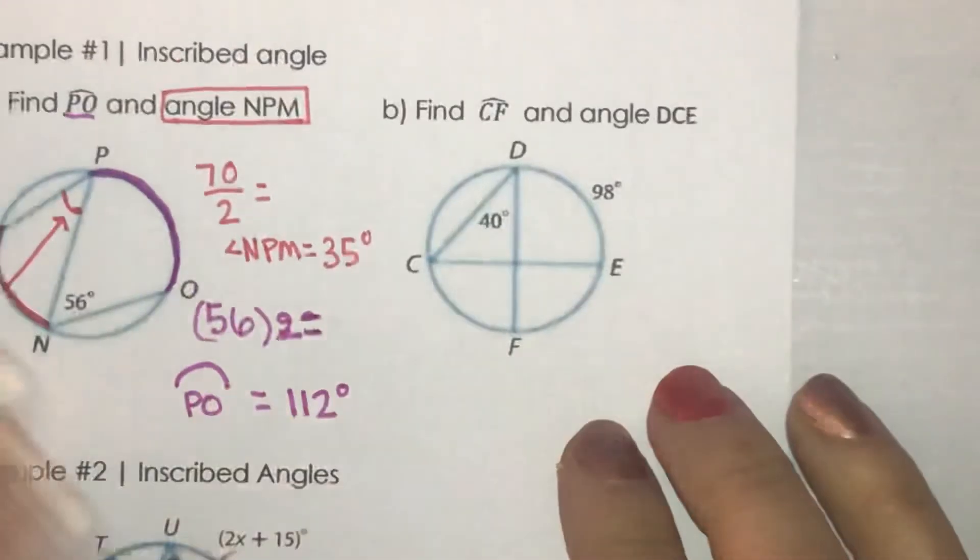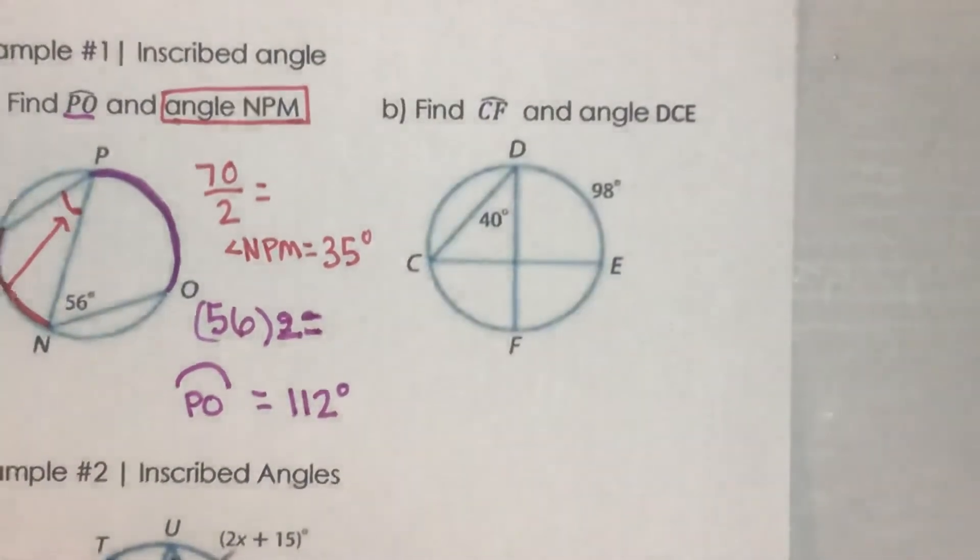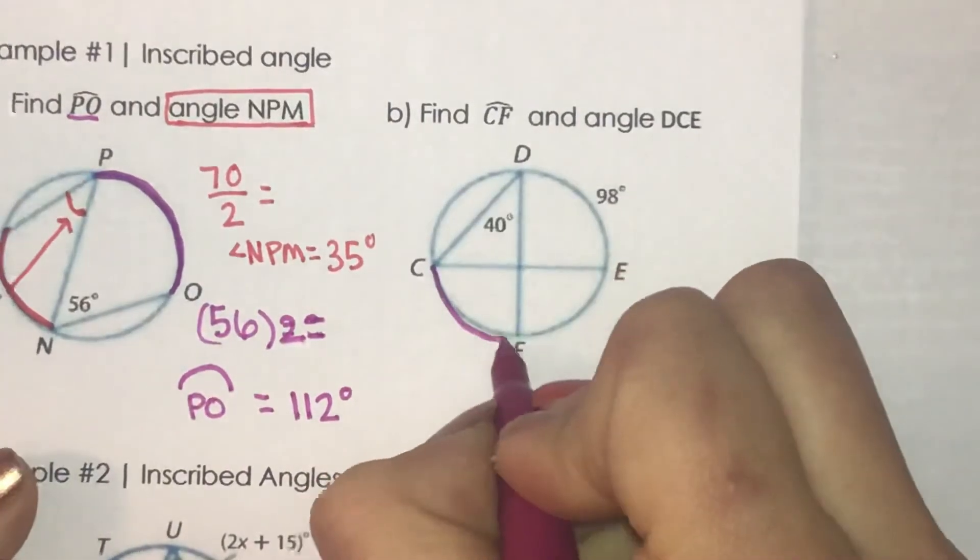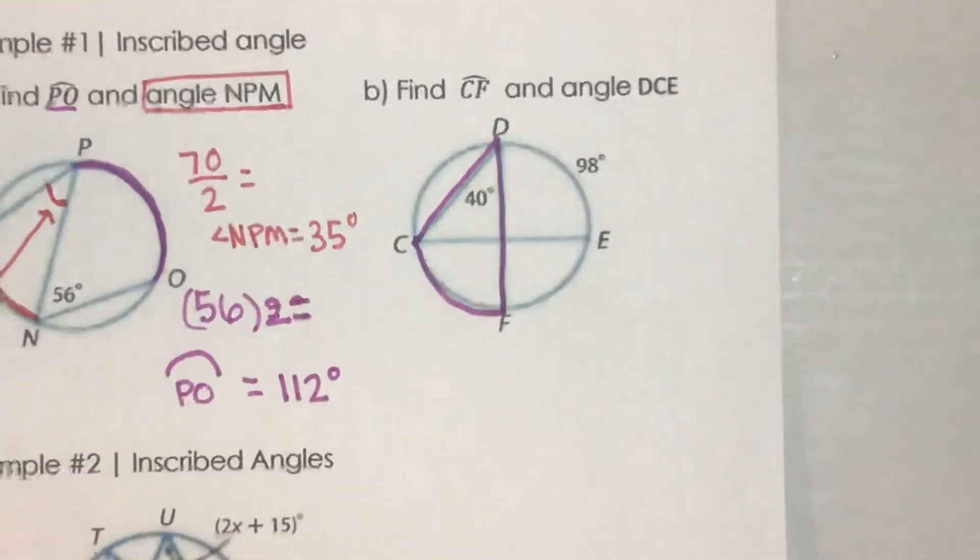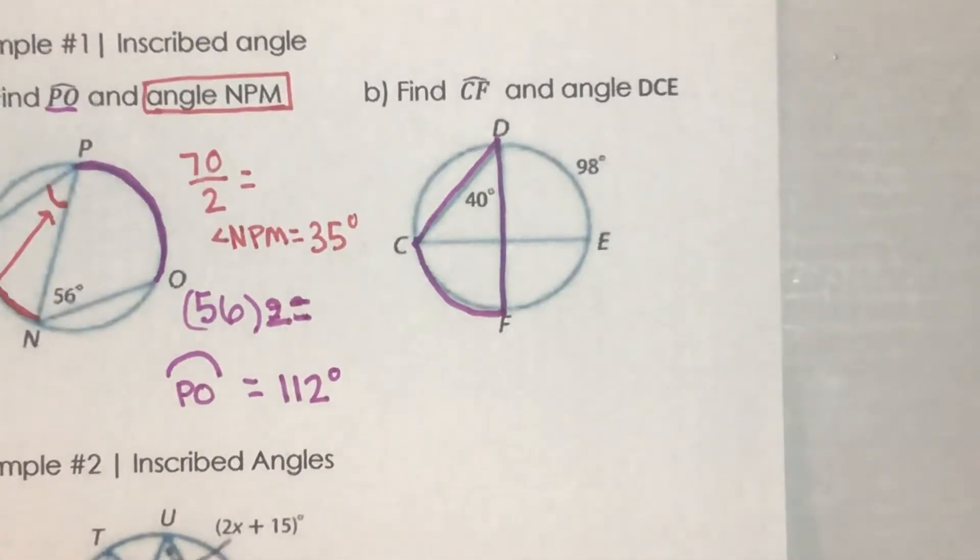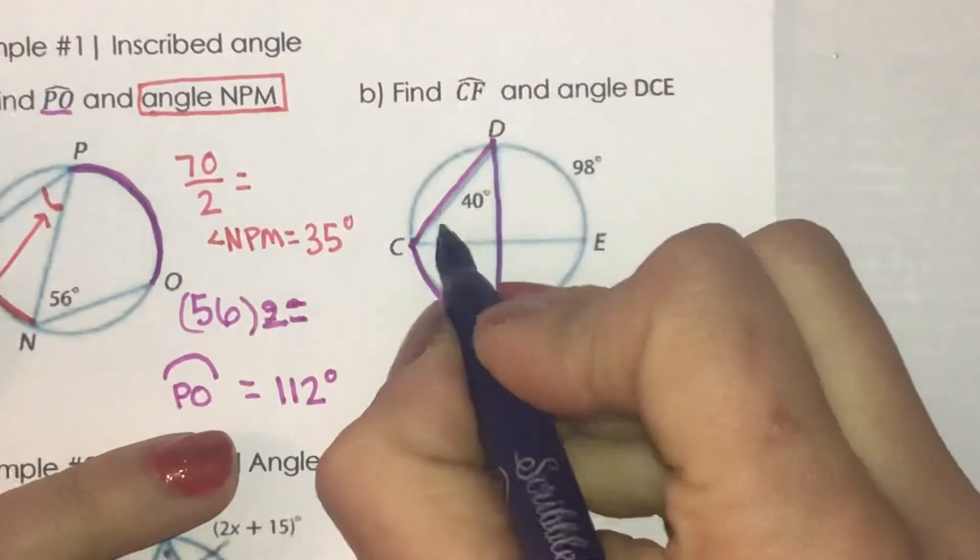So I'm going to do letter B here. So arc CF. I'm going to mark my arc CF. Looks like it's created by this piece here. And then I'm going to find angle DCE. DCE. So I'm going to find this guy. And it looks like it's created by this piece here.